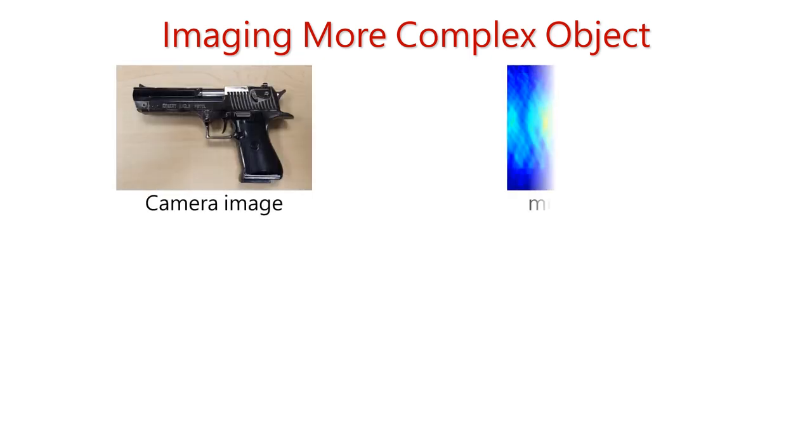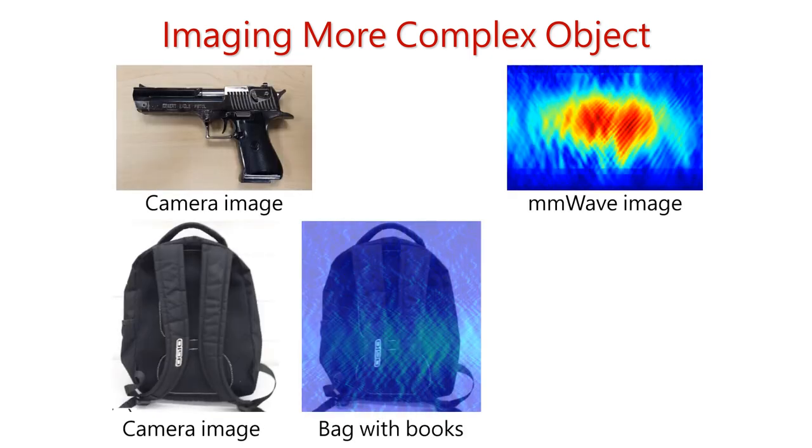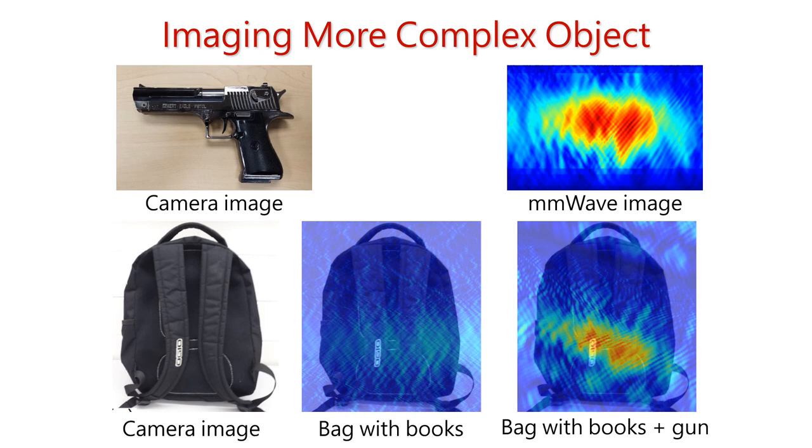We tested our systems to image more complex objects like this model gun and by placing it inside a school bag. Although the quality of the image of the gun when it is placed inside the bag with books is not that high, we can still determine the orientation of the gun and also discriminate between the butt and the barrel of the gun. In the future, more advanced image processing techniques like power adaptation and exposure correction can improve the image quality further.